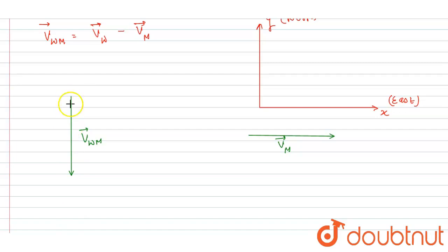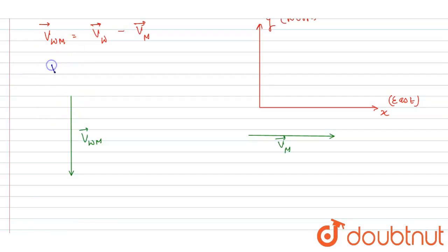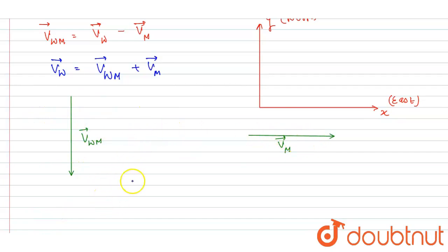If I write minus Vm, it will point in the opposite direction. So from the equation, velocity of wind equals velocity of wind with respect to man plus velocity of the man. We add the velocity of the man to get the actual wind velocity.